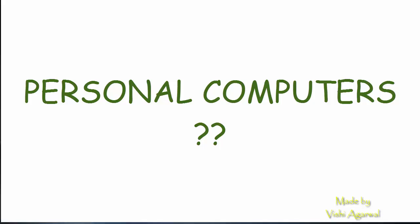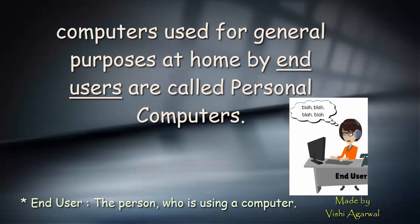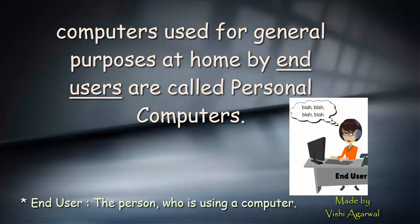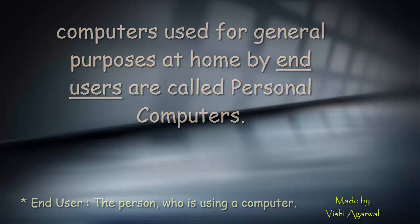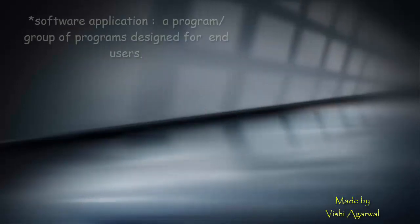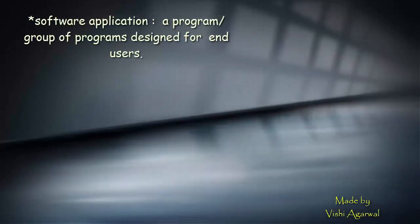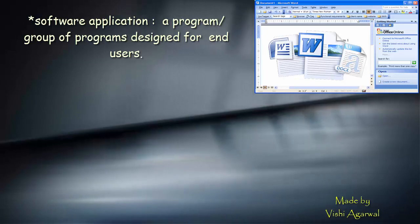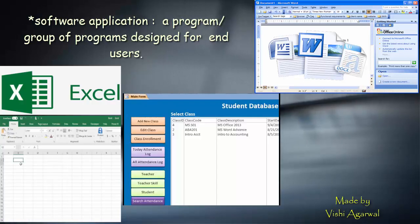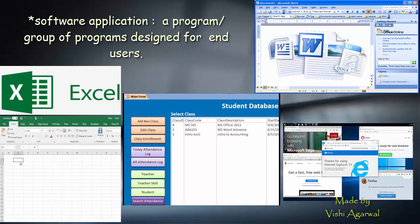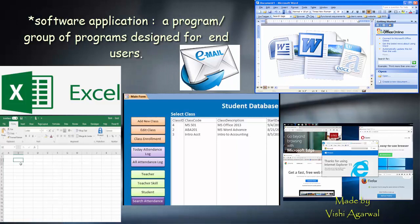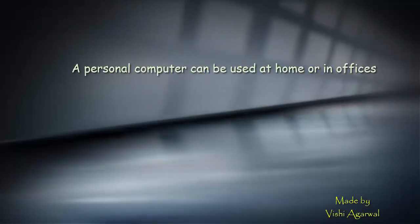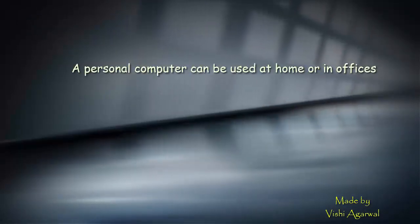So what are personal computers? Computers used for general purposes at home by end users are called personal computers. The software applications include word processing, spreadsheets, databases, web browsers, email clients, games, etc. A personal computer can be used at home or in the office.